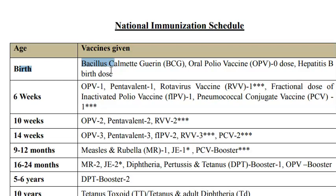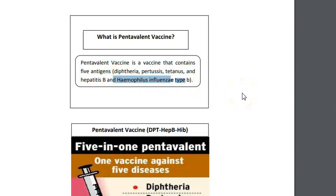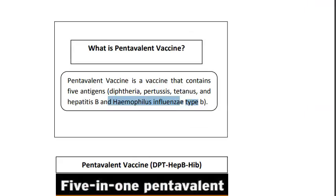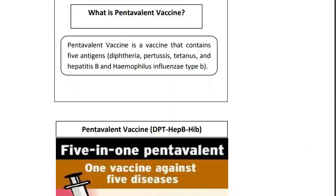At six weeks, oral polio vaccine 1 is given along with the pentavalent vaccine. Pentavalent means five antigens: diphtheria, pertussis, tetanus (DPT), plus hepatitis B, and Haemophilus influenzae type b. Haemophilus influenzae is a bacterium that causes meningitis, not influenza. You can remember it as DPT-HH — a five-in-one vaccine.